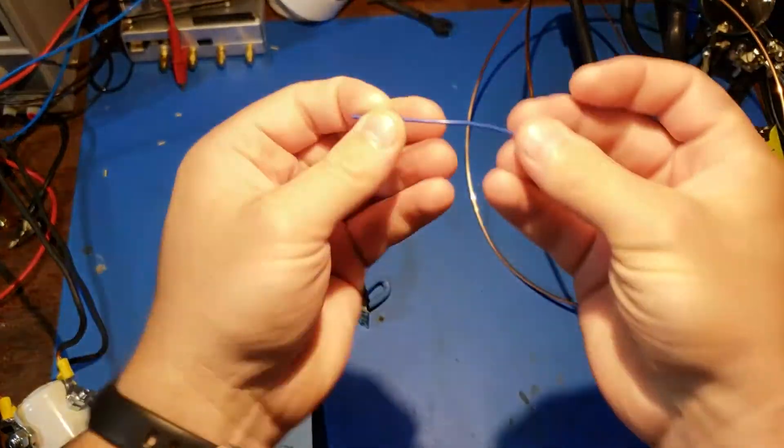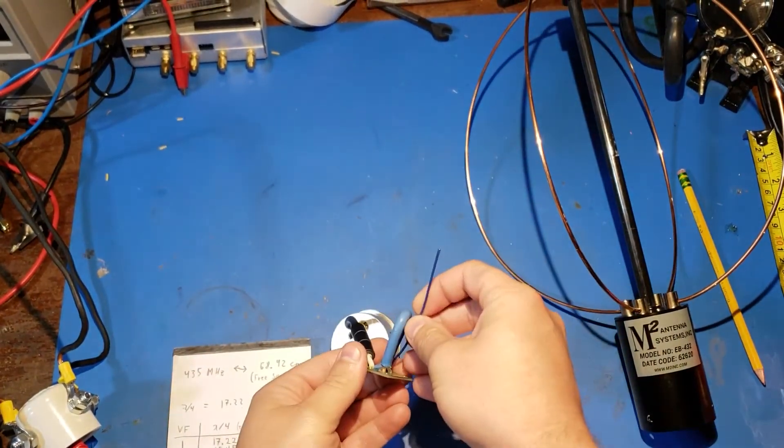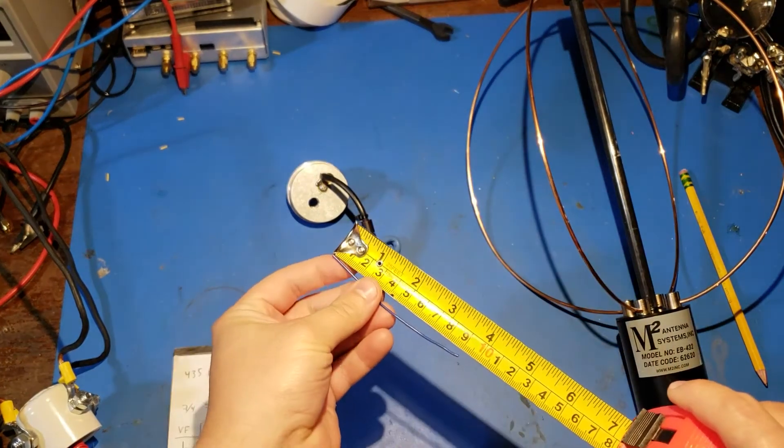And I went ahead and I bent this piece of wire along the twin-ax here, and then I measured that, and I measured 9.2 centimeters.